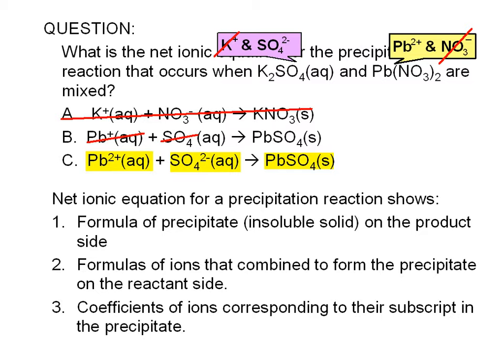Then, coefficients for the ions correspond to their subscript in the formula of the precipitate. In the case given here, the subscripts of lead and sulfate are both unwritten, that is, implied to be 1.